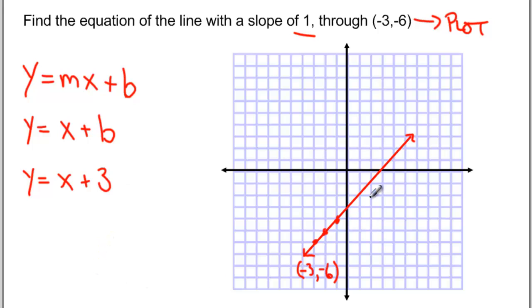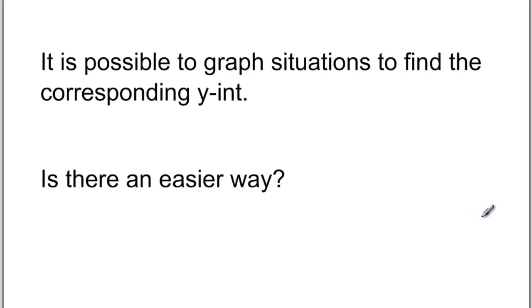This is an easy method to use when our y-intercept is easy to read, but that's not always going to be the case. So it is possible to graph situations to find the corresponding y-intercept given a slope of a line and a point that's on the line. But we want to know if there's an easier way, a way that doesn't involve estimation or approximation.